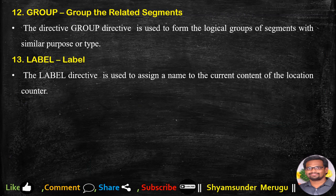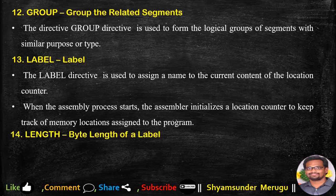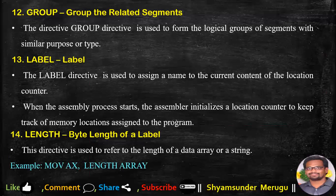The LABEL directive is used to assign a name to the current content of the location counter. When the assembly process starts, the assembler initializes a location counter to keep track of memory locations assigned to the program. LENGTH stands for byte length of a label. This directive is used to refer to the length of a data array or a string. For example, 'MOV AX, LENGTH array'.